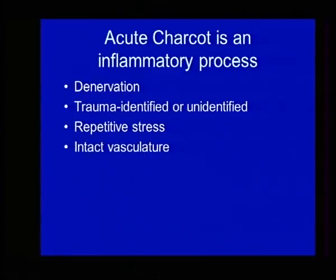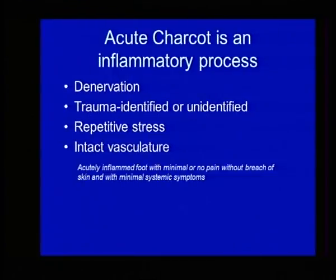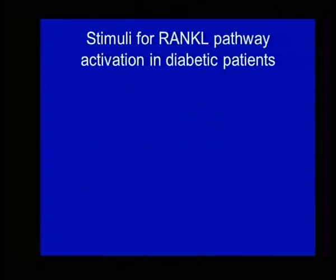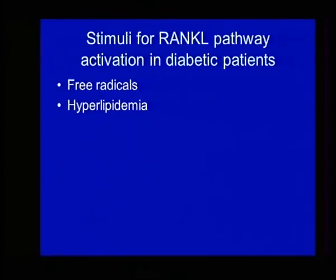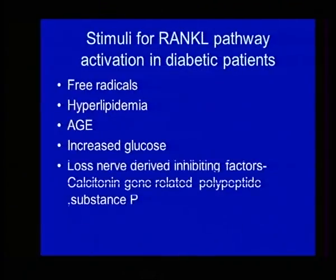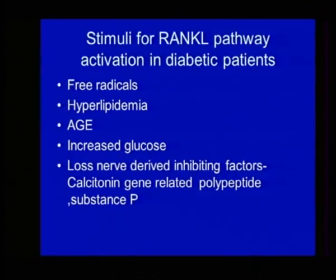Acute Charcot is because of denervation, trauma — identifiable or unidentifiable — repeated stress, and intact vasculature. A few factors stimulate the RANKL pathway which drives uncontrolled inflammation. Many of them, including increased glucose, we don't have real control over. But if you stabilize the foot and reduce the activity, I think you can manage most of the time to save the foot.